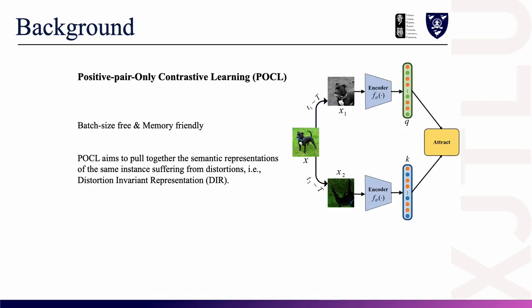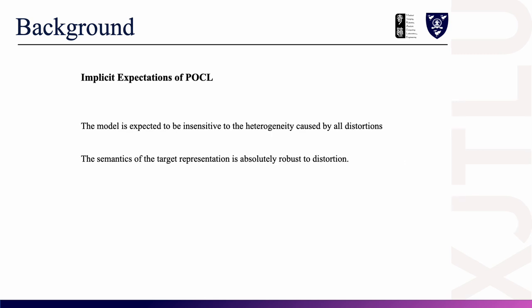To overcome these shortcomings, some positive pair-only contrastive learning methods have been widely studied. POCL aims to align the semantic representations of positive samples of the same instance subjected to different distortions. This type of representation we call distortion-invariant representation, or DIR for short. This means the contrast process relies only on positive samples, making POCL methods batch-size-free and memory-friendly. Analyzing the principles of POCL further, we find that there are some implicit expectations.